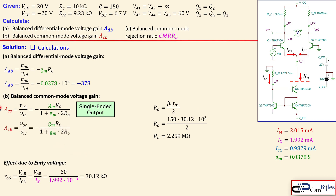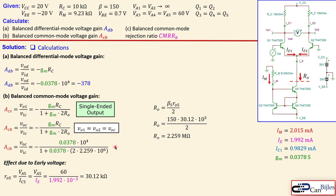The high output resistance of the Wilson current source reduces the common mode gain and increases the common mode rejection ratio. Moving from single-ended to balanced format: Vo1 and Vo2 are exactly equal when the same voltage is applied to both bases, so the balanced common mode gain equals the single-ended value. Substituting all known values, we get Acm = -0.00221, which is almost zero.